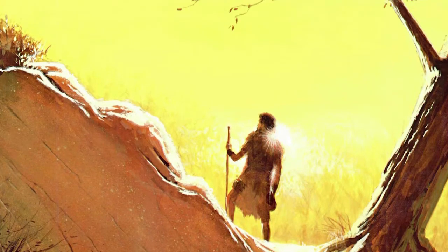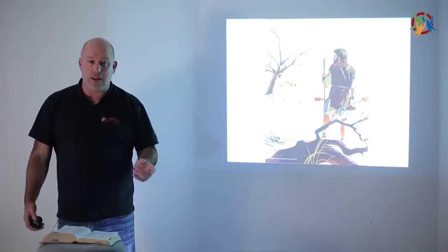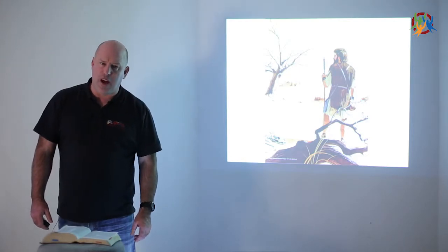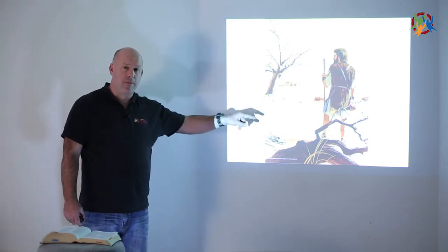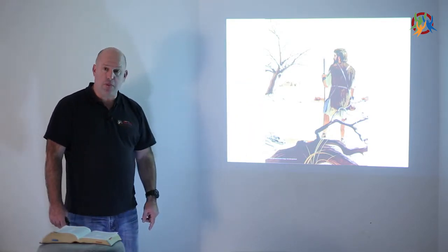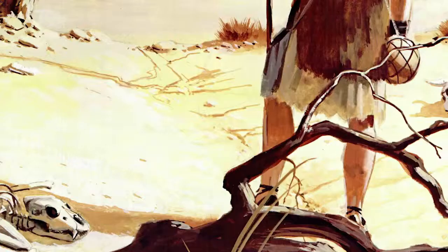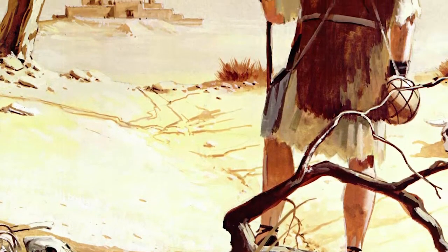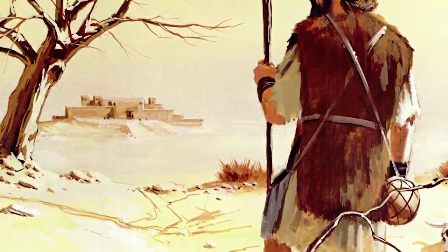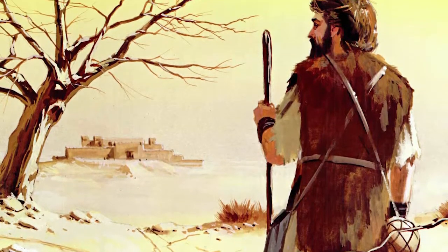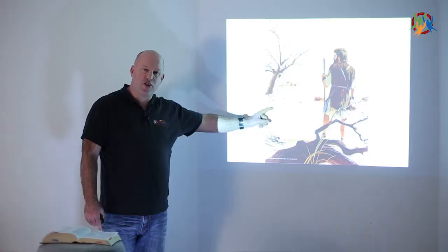God says Elijah, up you get and go to a place called Zarephath. Never been there before. Zarephath was a place where Jezebel the queen came from, and God was sending him back there. But as he walked, he couldn't believe what he saw because there was no rain. The animals were dying, the ground was so hard it was cracking, the trees were dying, the crops were failing, and there was barrenness everywhere because the king told the people to stop worshiping God.